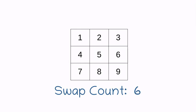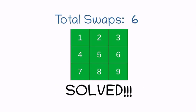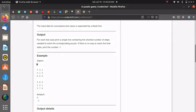Now I would like to show you the input and output format. Here you can see you will be given a number of test cases and an equal number of puzzles in the form of a matrix. For each test case, you have to print a single line containing the shortest number of steps needed to solve the corresponding puzzle. If there is no way to reach the final state, you can print minus 1.